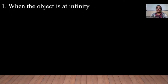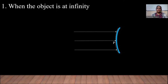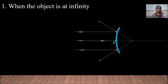First position: when the object is at infinity. Let us consider a convex mirror. This is the pole. Let us consider three rays which are incident on the convex mirror — they get reflected. If we observe these reflected rays, they appear to come from a point on the principal axis. Hence, the image of an object at infinite distance is formed at the focus of the convex mirror.